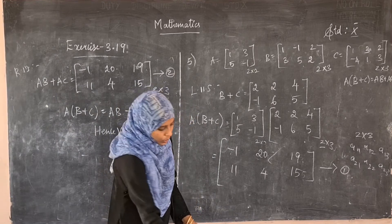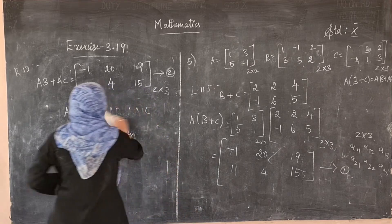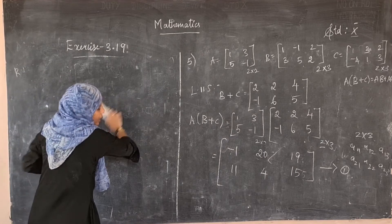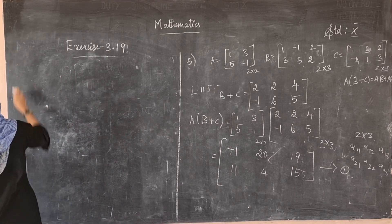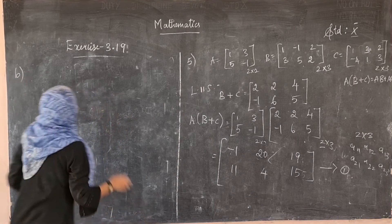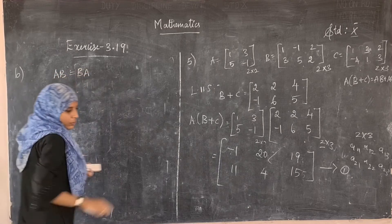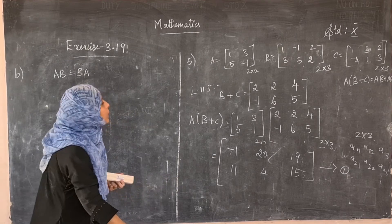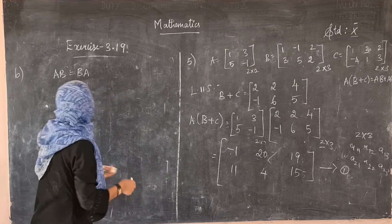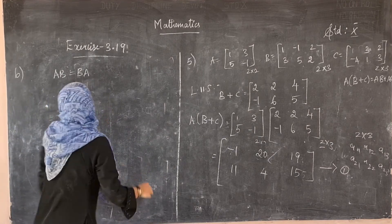Now we move on to the sixth sum. They have given two matrices of order 2×2 and asked us to prove the commutative property, that is AB = BA. This is the assignment for you — you have to prove AB = BA for the given matrices.